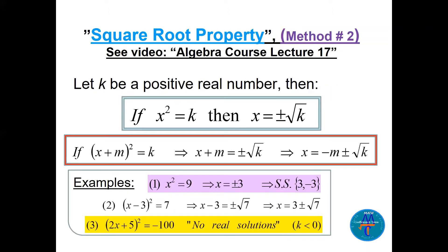Method two is the square root property. If x squared equals k, then x equals plus or minus the square root of k. More generally, if x plus m, all squared, equals k, then x equals minus m plus or minus the square root of k. For example: x squared equals 9 gives x equals plus or minus 3 — two solutions. And x minus 3, all squared, equals 7 gives x equals 3 plus or minus the square root of 7.